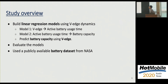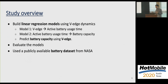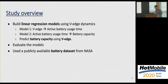This is the study overview. The authors build two linear regression models using VH dynamics. The first model predicts active battery usage time using VH, and the second model predicts battery capacity using active battery usage time. The authors evaluate these models using the publicly available battery dataset from NASA.